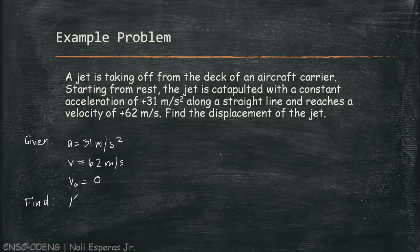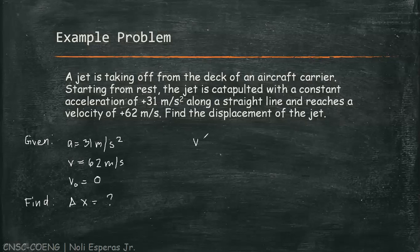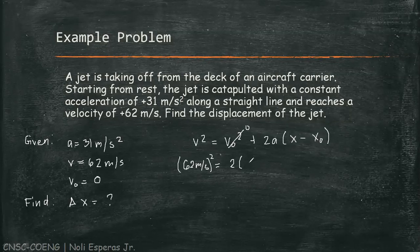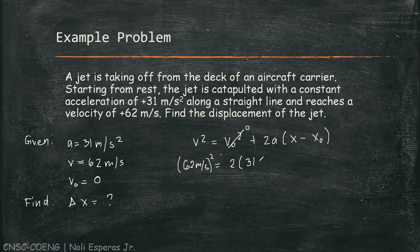Based on the given and required values, we can use the fourth motion equation, which is v² = v₀² + 2a(x - x₀). Let's substitute the given values. We have 62² = 0 + 2 times 31 m/s² times (x - x₀), where x - x₀ is displacement.